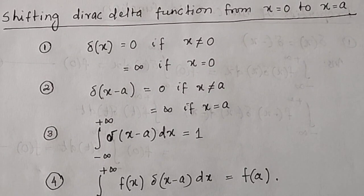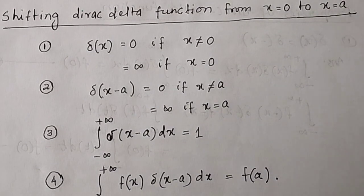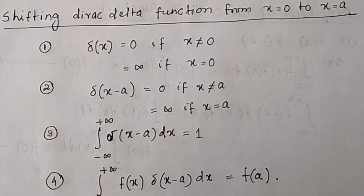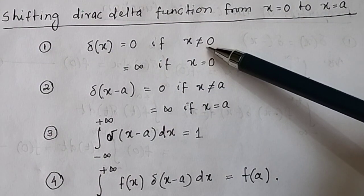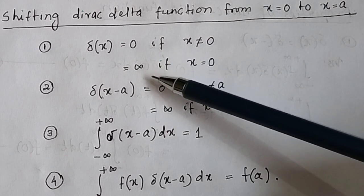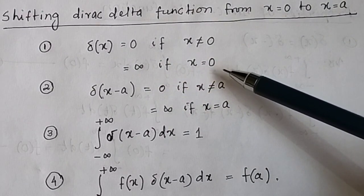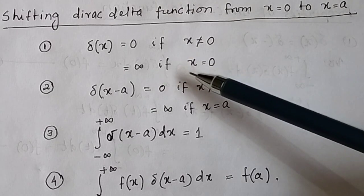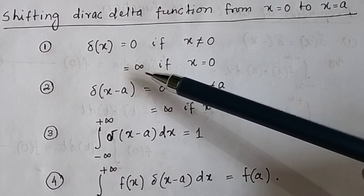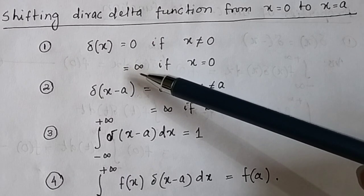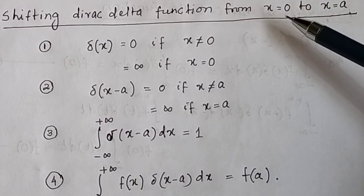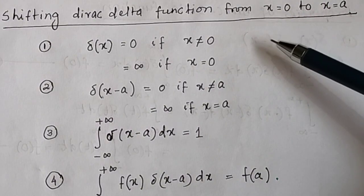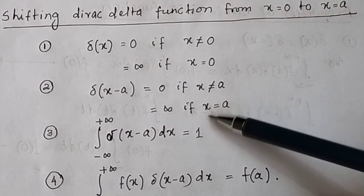Shifting of the Dirac delta function from x equal to 0 to x equal to a. We know the Dirac delta function is defined as delta(x) equal to 0 if x is not equal to 0, and delta(x) equal to infinite if x equal to 0. So at x equal to 0, the Dirac delta function has its maximum value. But if you shift the Dirac delta function from x equal to 0 to x equal to a, then what will be the value of the Dirac delta function?